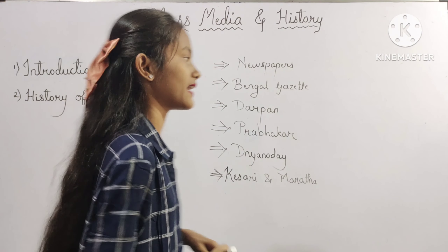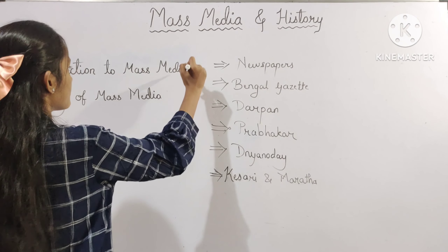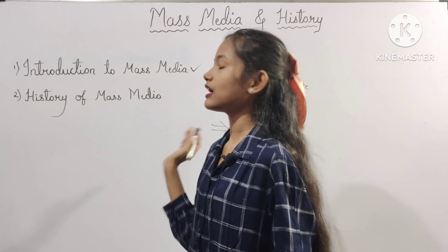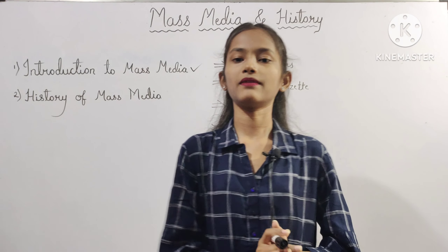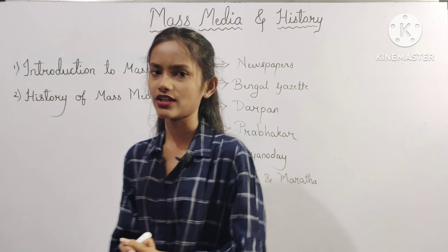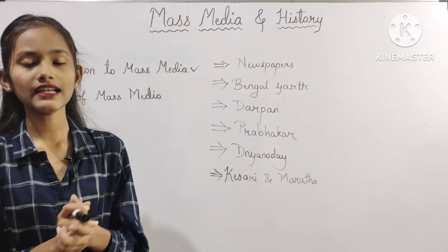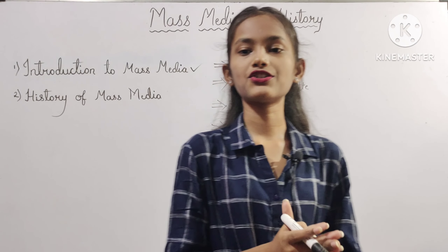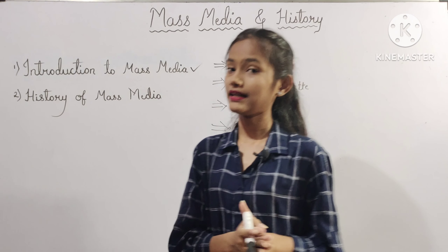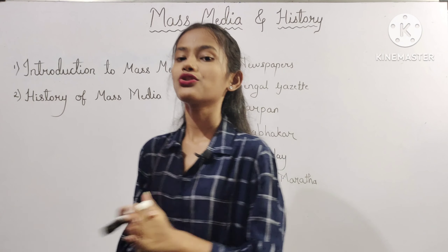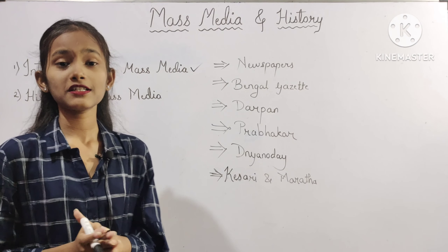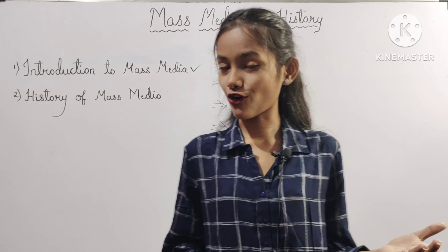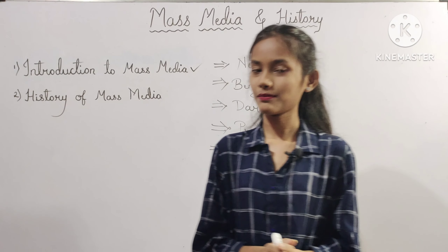In the olden days, news would spread among people by word of mouth. This completes our introduction to mass media. Now we will start with our second point, that is History of Mass Media. The printing technology and the newspapers were started in India after the arrival of the British people. People started receiving printed news through newspapers, and newspapers became the first mass medium of circulating knowledge and information among the people.